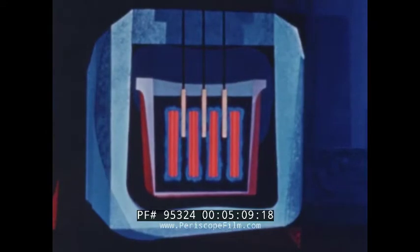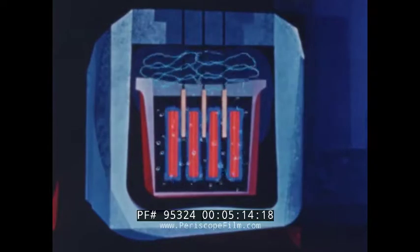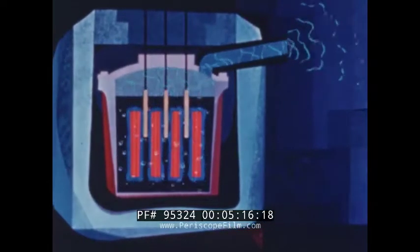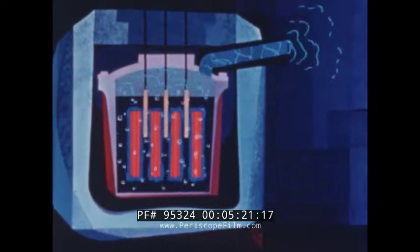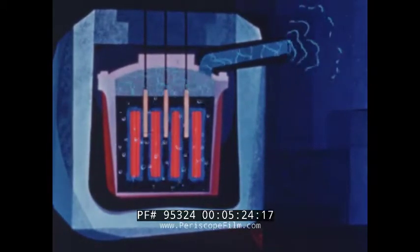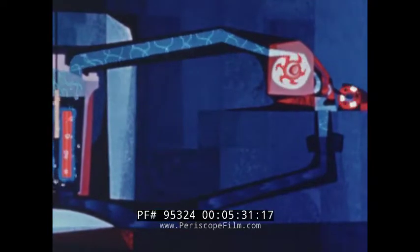The steady release of heat makes the moderating water boil and give off steam. If we now cap the top of our reactor tank, we have a working steam boiler. We refer to this type of arrangement as a boiling water reactor. We can now pipe the steam off to drive a steam turbine and electrical generator, and we have a full-fledged electric power plant.